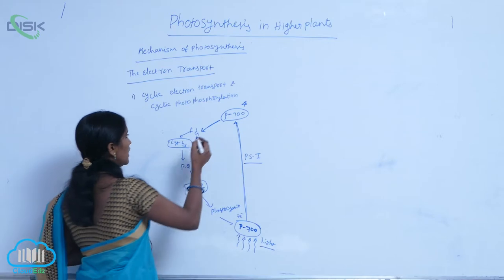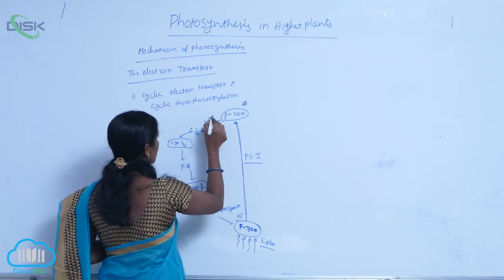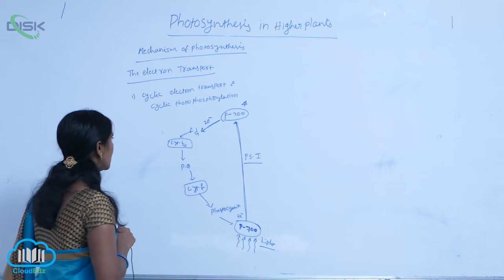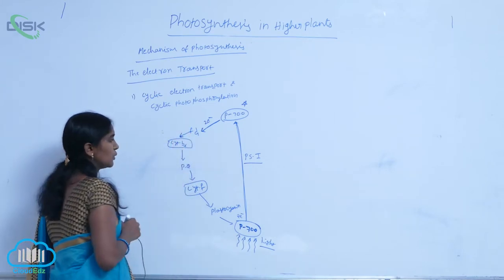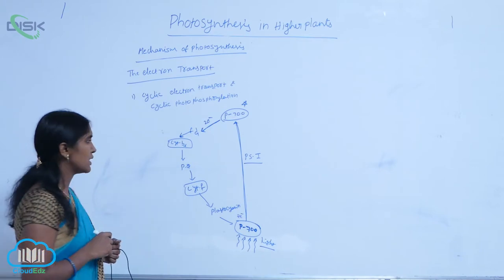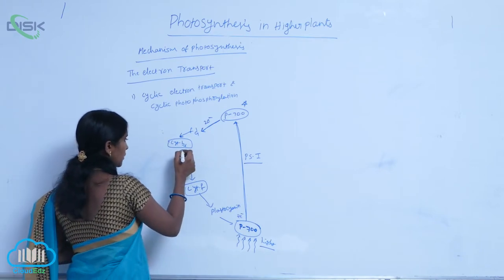The two electrons are first absorbed by ferredoxin, which acts as an electron carrier, and then passed to cytochrome B6.